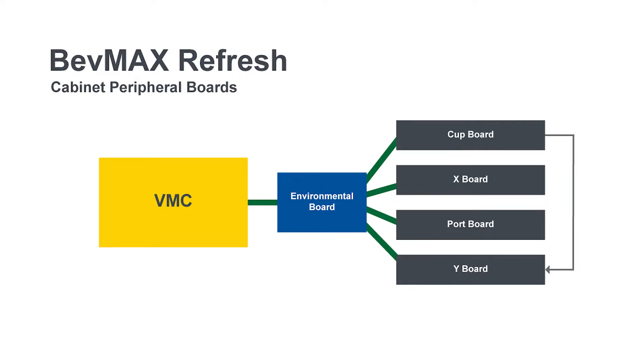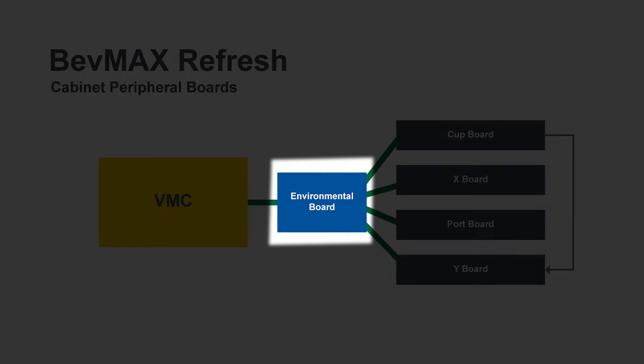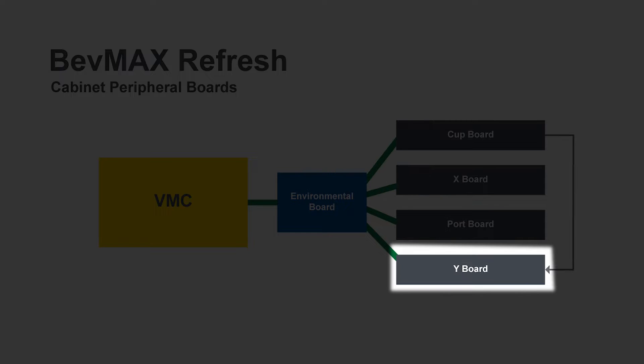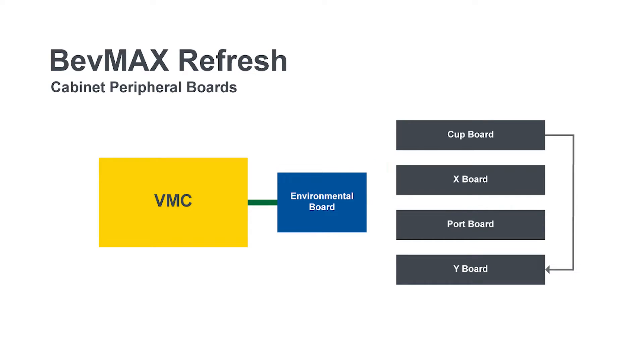You ever walk up to a BevMax and it shows unavailable? It's most likely a communication issue. The communication issue comes from your cabinet peripheral boards. The cabinet peripheral boards in a BevMax Refresh are: Port Board, Environmental Board, X Board, Y Board, and Cup Board. If any of these boards are not communicating to the Environmental Board, which communicates to your VMC, then you have a communication issue and it will show unavailable.